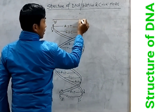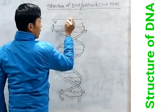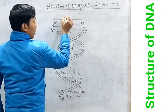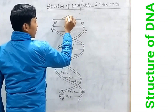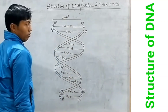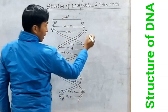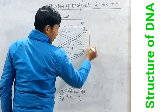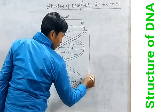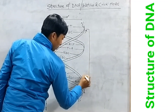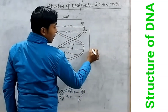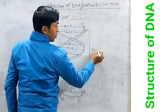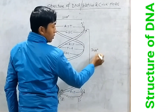This is the diameter of DNA — it is about 20 angstroms. And the distance of one complete turn is about 44 angstroms.